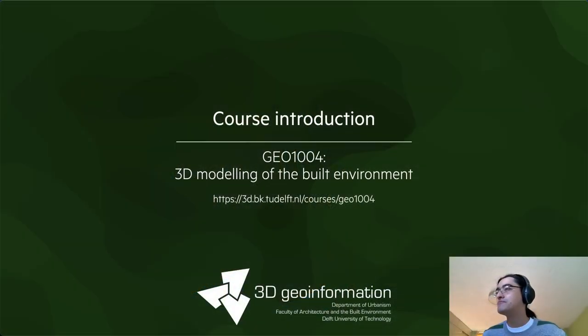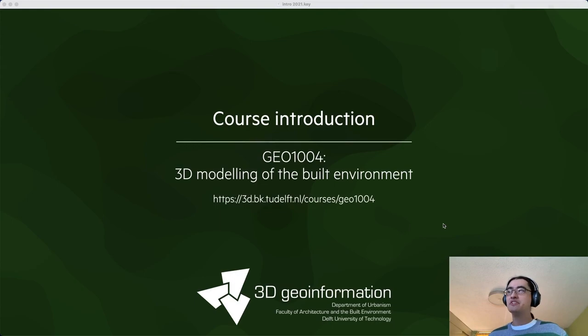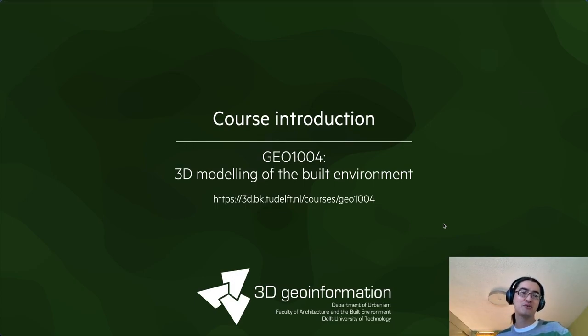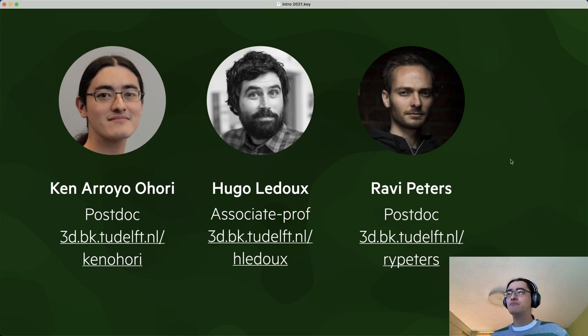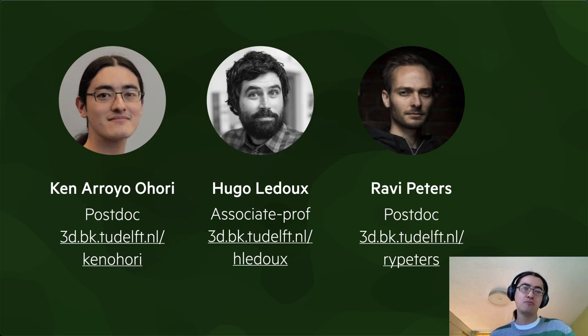Welcome to this very short introduction to the 3D modeling course. Its course code is Geo 1004, 3D modeling of the built environment. For this course, there will be three people trying to help you here. I'm the main one in charge, but you will also see Hugo Ledoux and Ravi Pater for some of the lessons. If you want more information, we have our own websites.